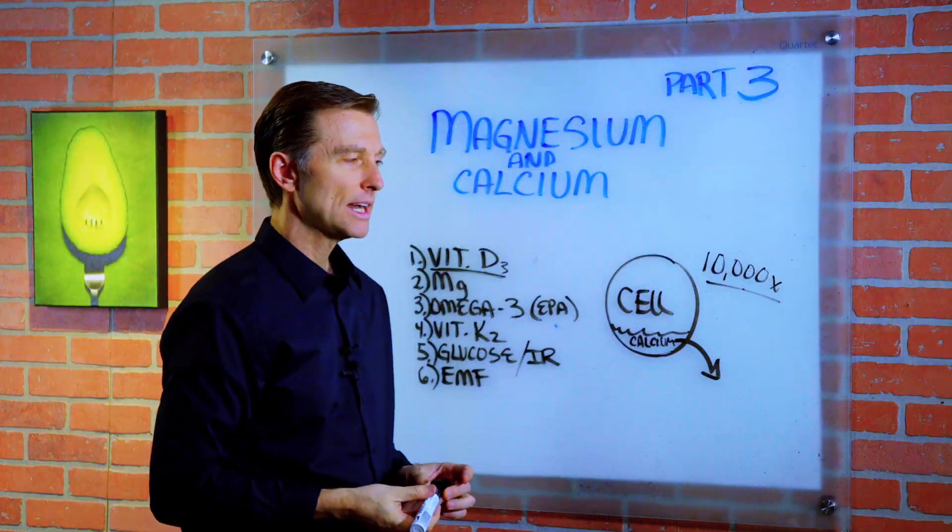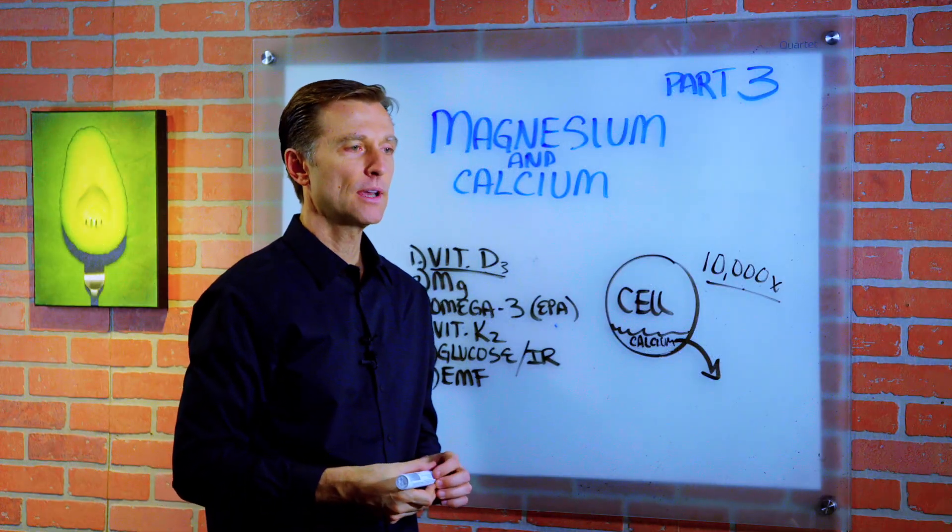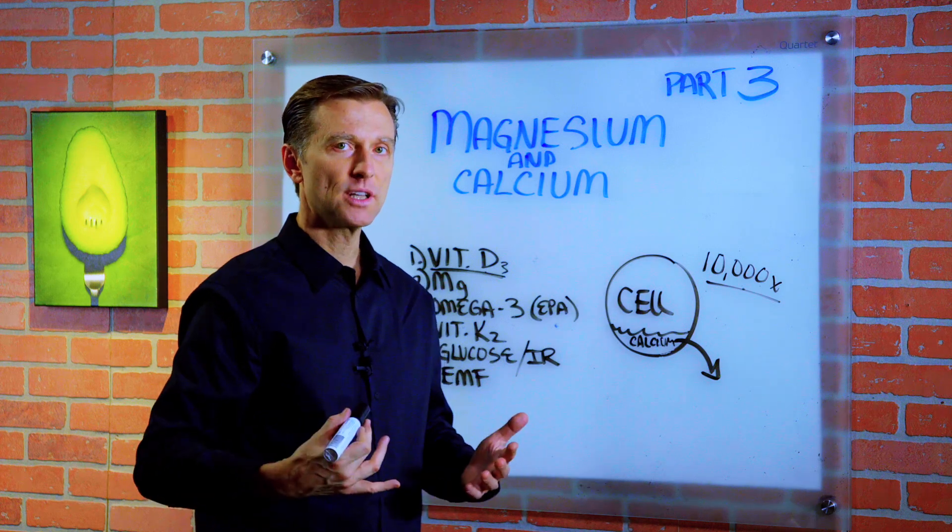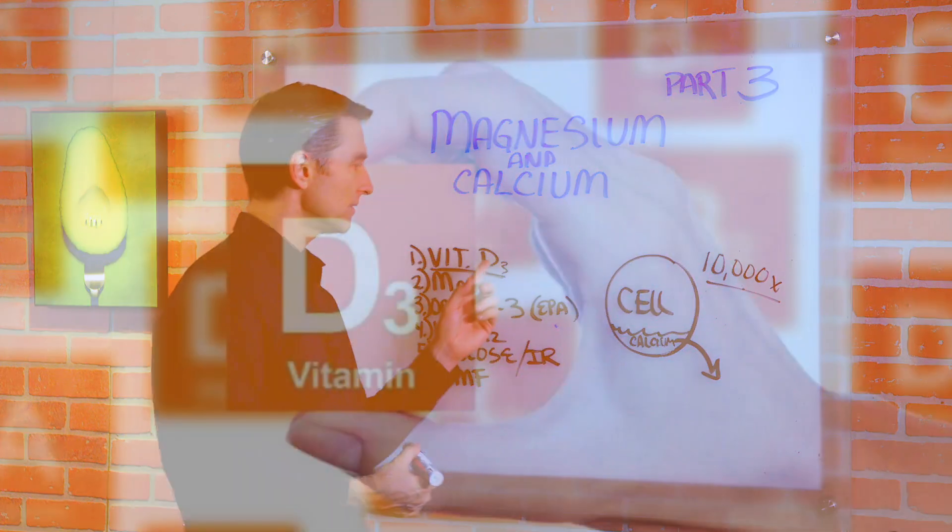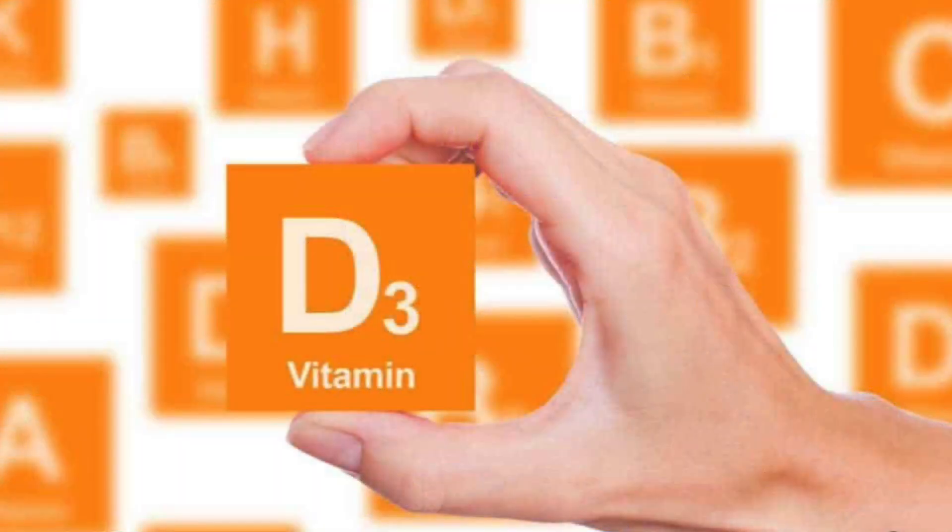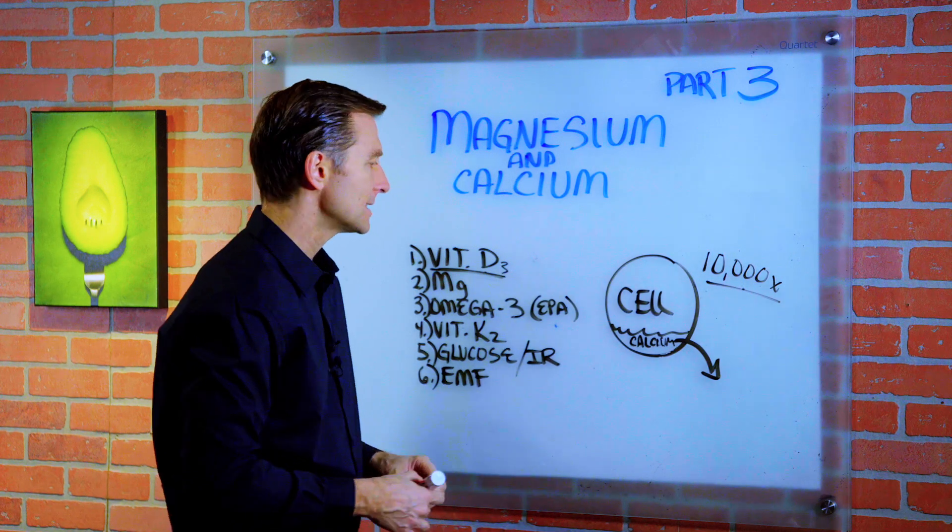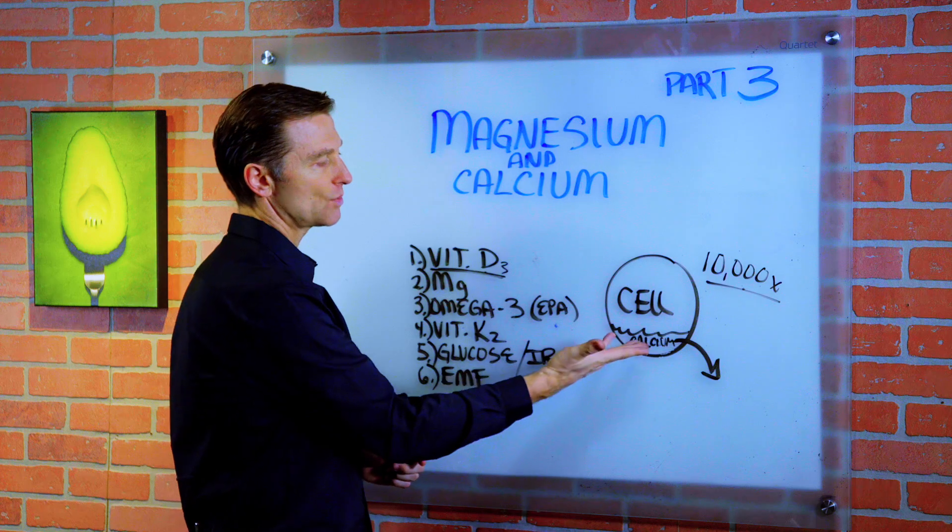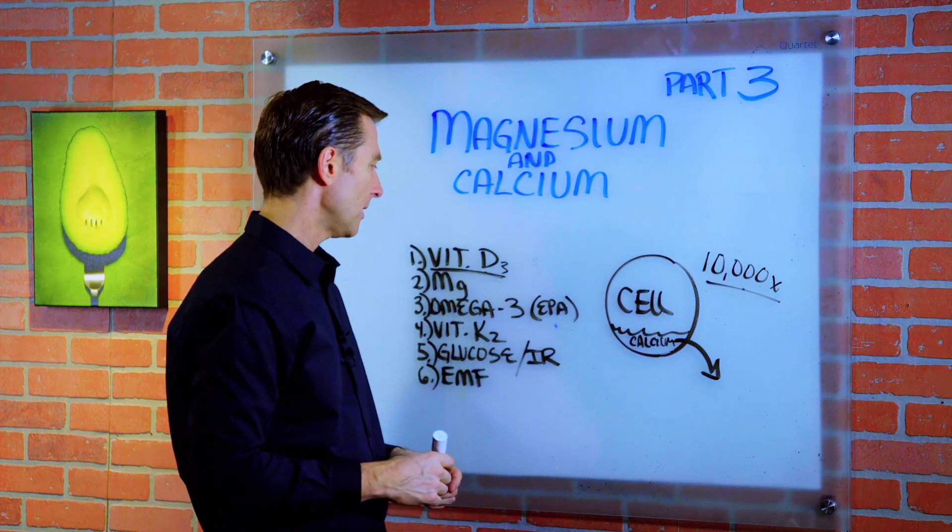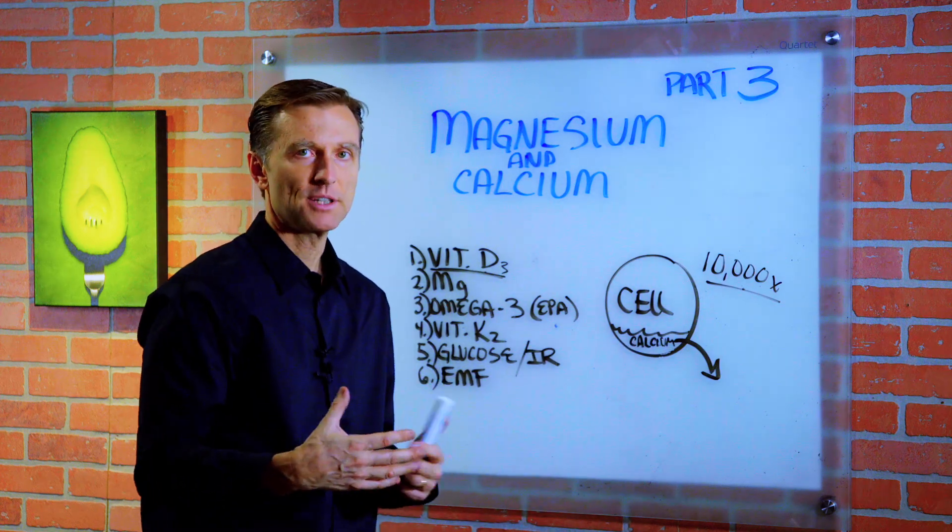And this is why a lot of times in winter, people start getting bone pain and kind of inflammation, not just from the deficiency of vitamin D3 itself, but from the accumulation of calcium. It makes things stiff and rigid.